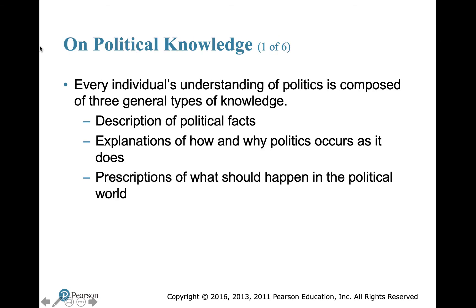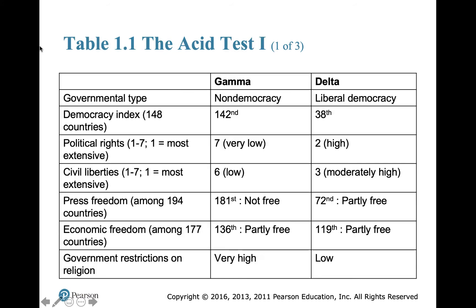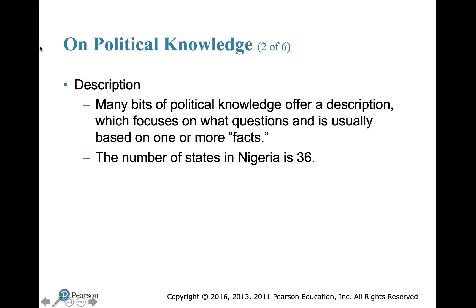Political knowledge includes descriptions of political facts, explanations of how and why politics occurs as it does, and feelings and prescriptions of what should happen in the political world. Descriptive knowledge focuses on 'what' questions and is usually based on facts — for example, Nigeria has 36 states, the U.S. has 100 senators, and 435 members of the House of Representatives. These are facts you generally can't dispute.